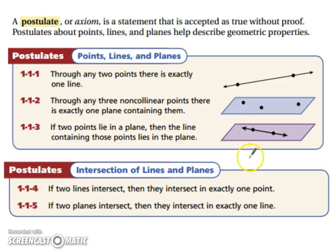And the next two are, if two lines intersect, they intersect at exactly one point. So if two lines intersect, then they intersect at exactly one point.